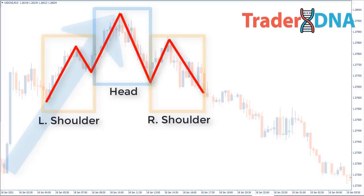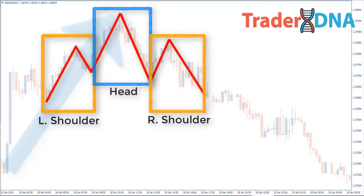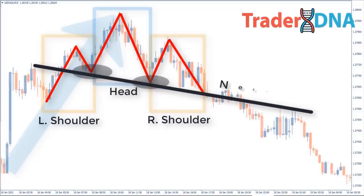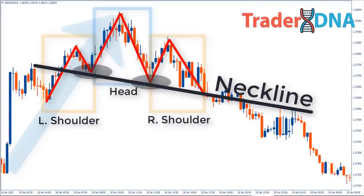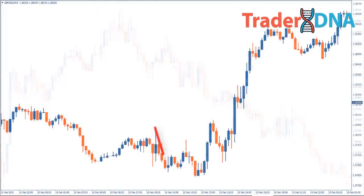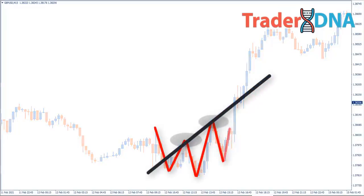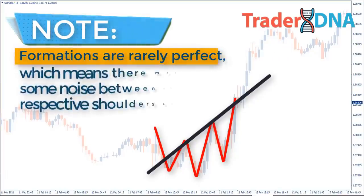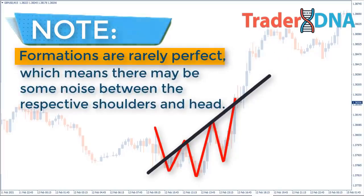Step five: neckline. The neckline is the level of support or resistance that traders use to determine strategic areas to place orders. To place the neckline, locate the left shoulder, head, and right shoulder on the chart. In the standard head and shoulders pattern, we connect the low after the left shoulder with the low created after the head. In an inverse head and shoulders pattern, we connect the high after the left shoulder with the high formed after the head. Note that formations are rarely perfect, which means there may be some noise between the respective shoulders and head.